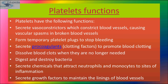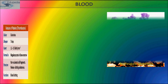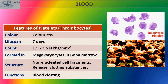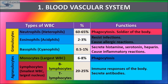Increase in platelet count is called thrombocytosis, whereas a decrease is known as thrombocytopenia. Functions of platelets: they secrete vasoconstrictors which constrict blood vessels causing vascular spasm in broken blood vessels; they form temporary platelet plugs to stop bleeding; they secrete procoagulants to promote blood clotting; they dissolve blood clots when no longer needed; they destroy bacteria; they secrete chemicals that attract neutrophils and monocytes to sites of inflammation; and they secrete growth factors to maintain the lining of blood vessels.